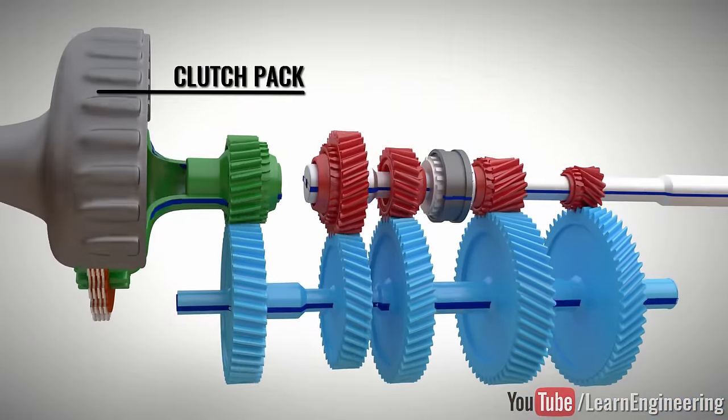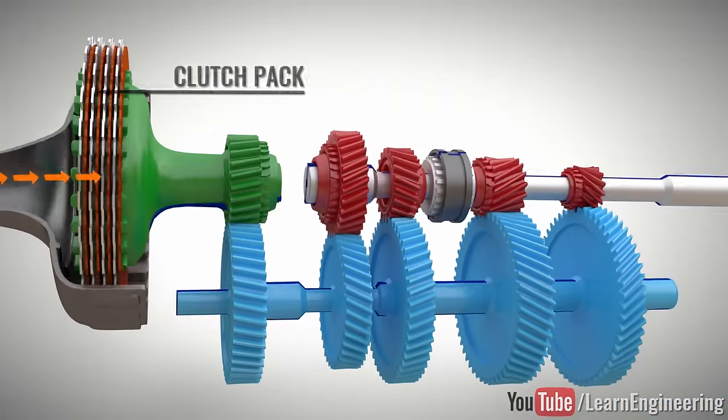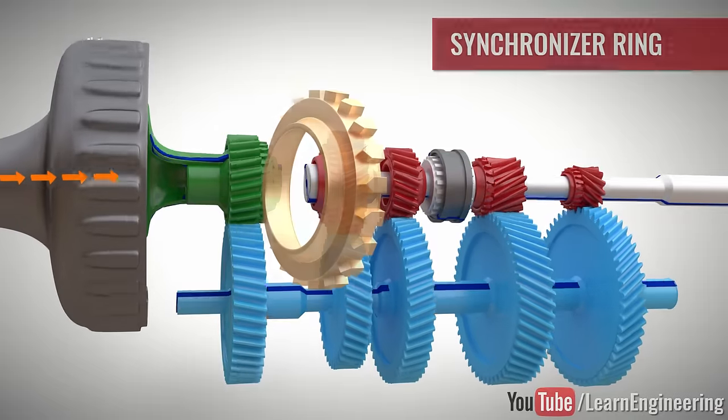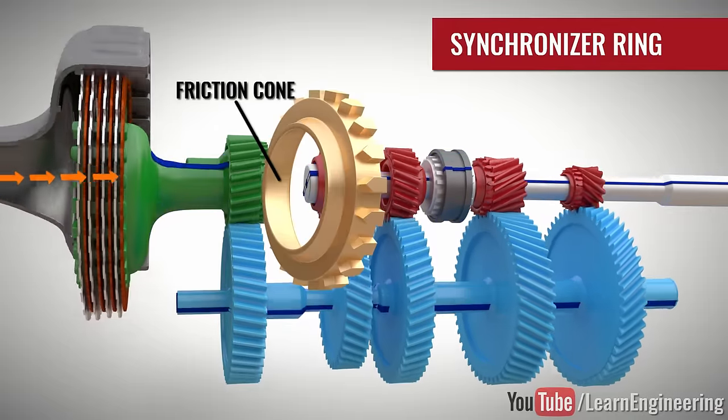By disengaging the clutch pack, the power flow to the gear set is discontinued. Now, a synchronizer ring with a friction cone can help to match the speed of gear with the sleeve.